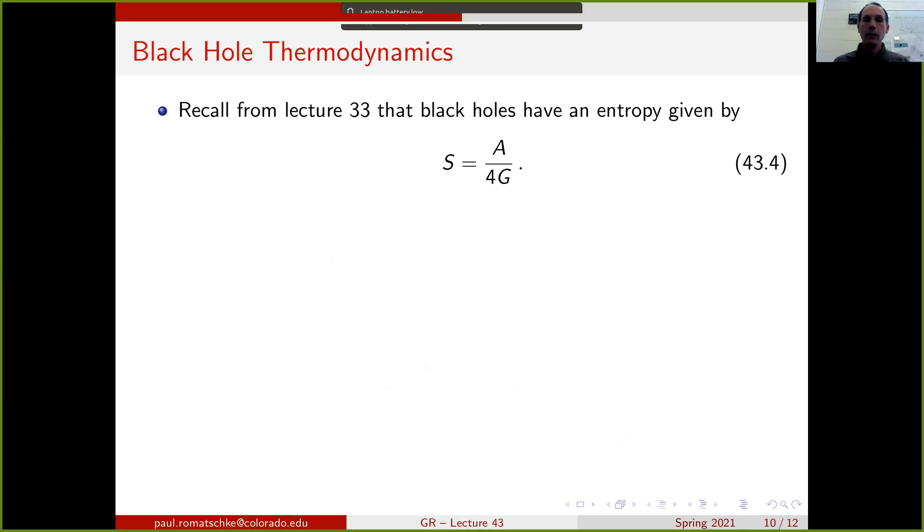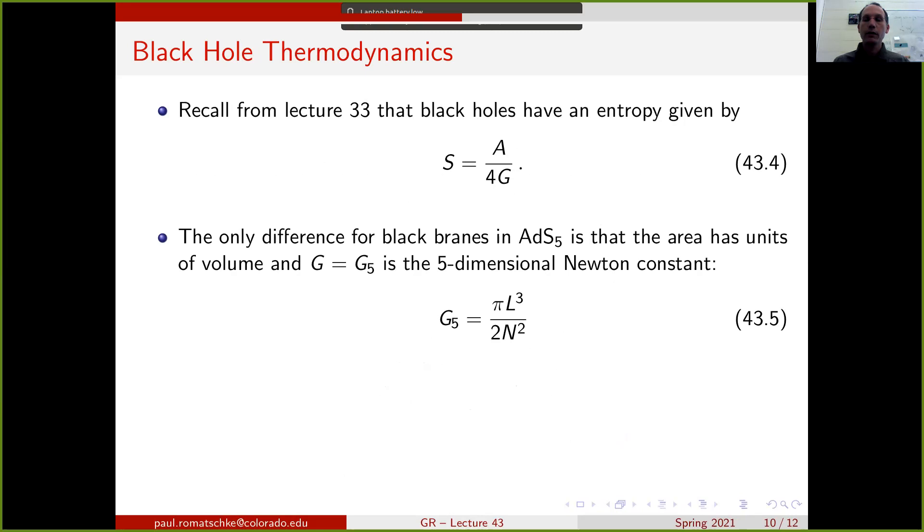How can one now use this to calculate anything in the quantum field theory? Let's be a little bit more concrete about this. Recall from lecture 33 that black holes have an entropy that's given by the Bekenstein-Hawking formula, as the entropy given as the area of the black hole divided by 4 times G, Newton's constant.